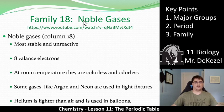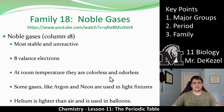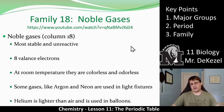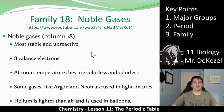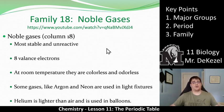Family 18 is the noble gases — the last column on the right. They are very, very stable and they do not react. They all have eight valence electrons, and at room temperature they are colorless and odorless. Some gases like argon and neon are used in light fixtures. You don't have to worry about them reacting with air or water or having any deadly effects — they're completely stable and unreactive, so they can be used in everyday applications. Helium, for example, is lighter than air and is used in balloons.